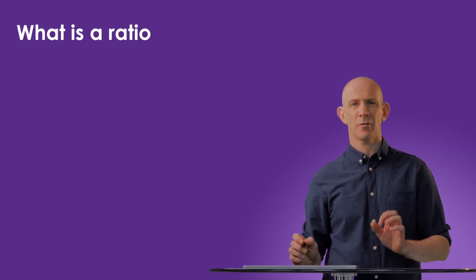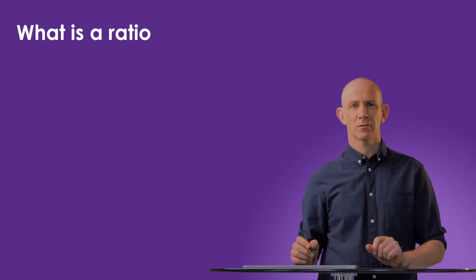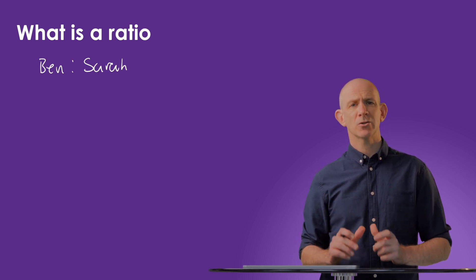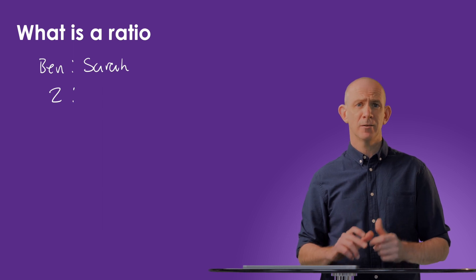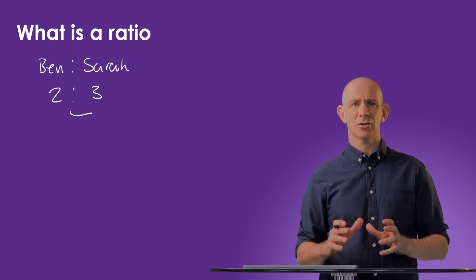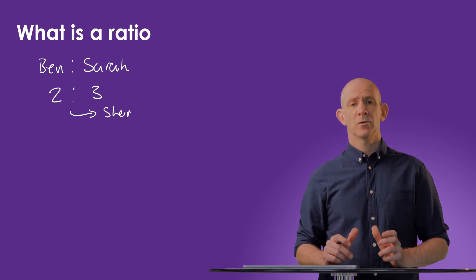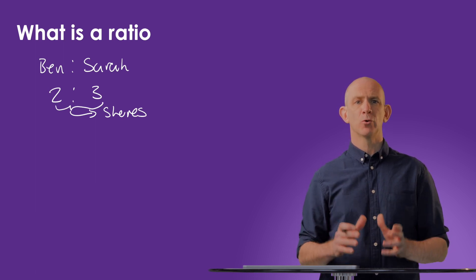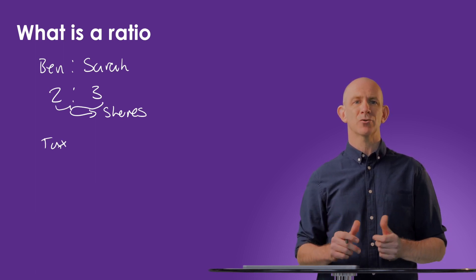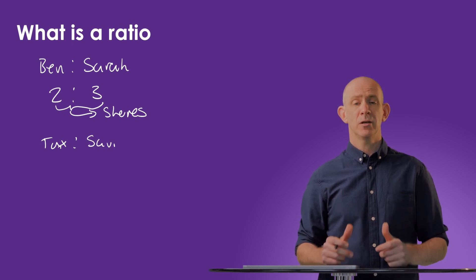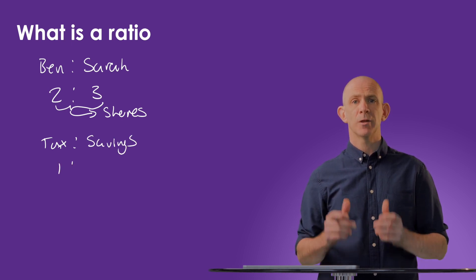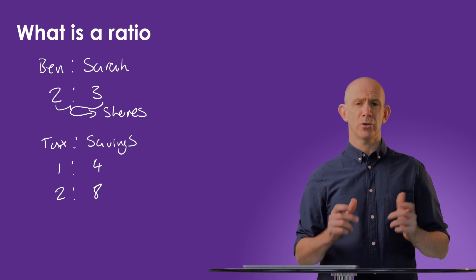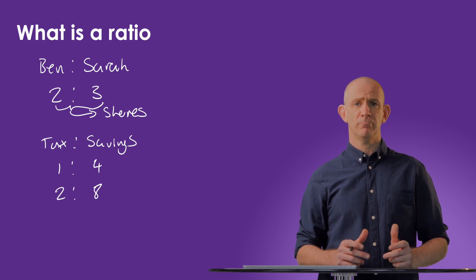Firstly, let's have a look at what a ratio actually is. A ratio is the relationship of one amount to another. We tend to call this relationship proportionality, but the method of writing the shares is called a ratio. Ratios can use different numbers but remain proportionally the same, and this is referred to as creating equivalent ratios. The numbers can get bigger or smaller, but the proportion between them remains the same. This is done using multiplication or division.